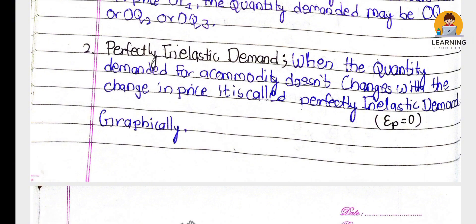The next type is perfectly inelastic demand. When the price frequently changes but demand does not change, that is perfectly inelastic demand. Price frequently changes but quantity demanded remains constant - that is perfectly inelastic demand.